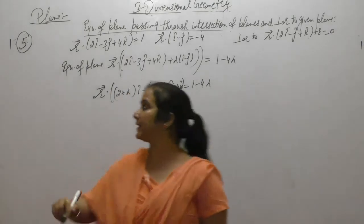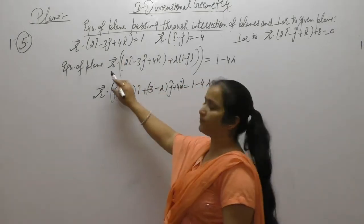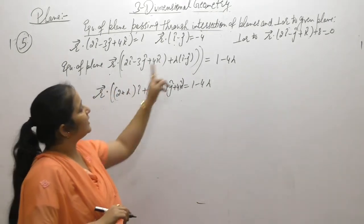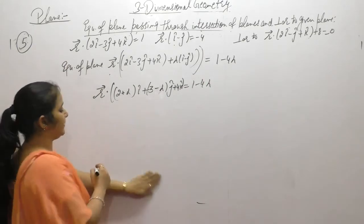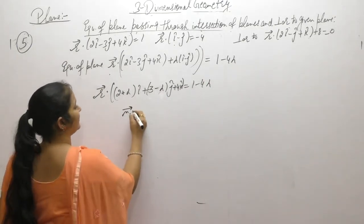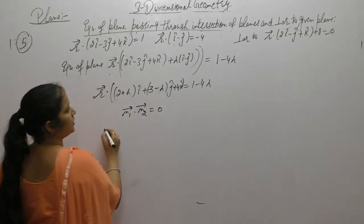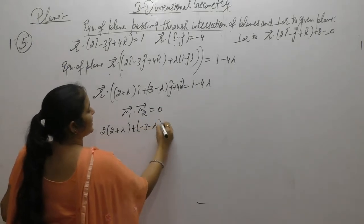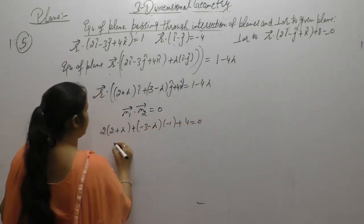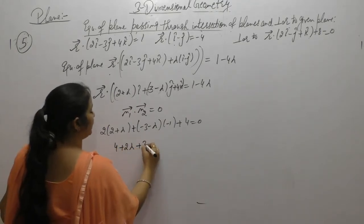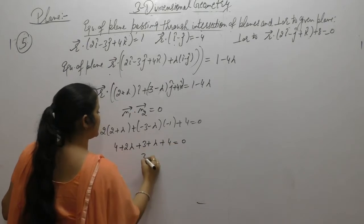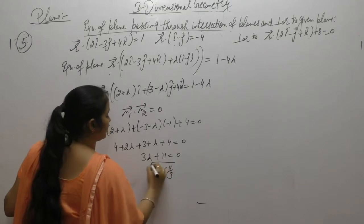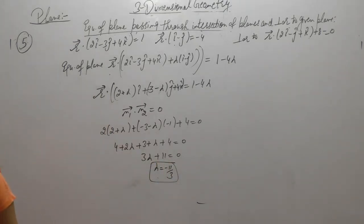The equation of a plane passing through two given planes and perpendicular to a given plane — these are the two equations. The equation of the plane passing through their intersection is set up, and since the given planes are perpendicular, n1 vector dot n2 vector equals 0. So: 2×2 + (λ−3)(−1) + 4×1 = 0, giving 3λ + 11 = 0, so λ = −11/3.